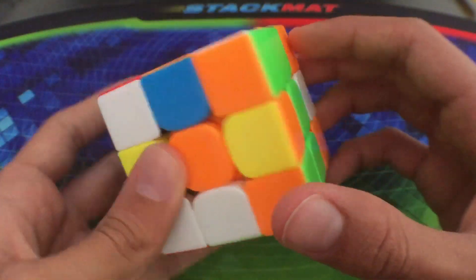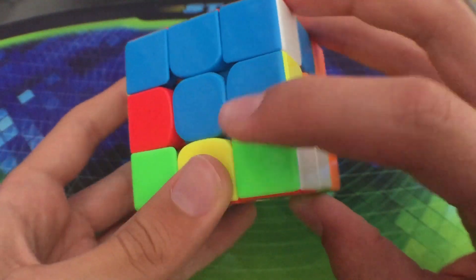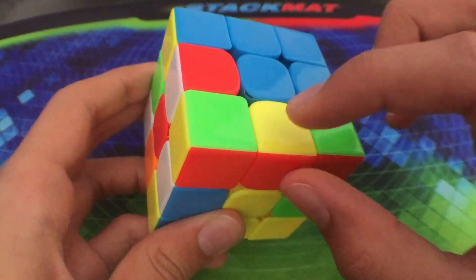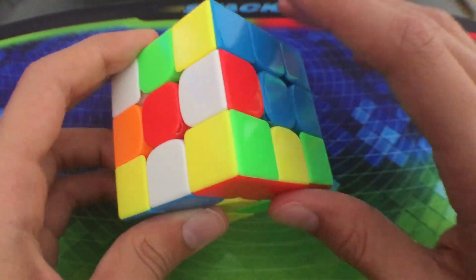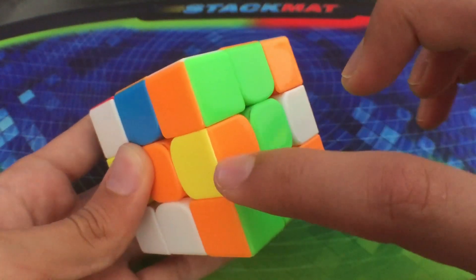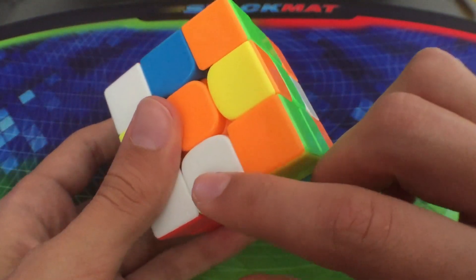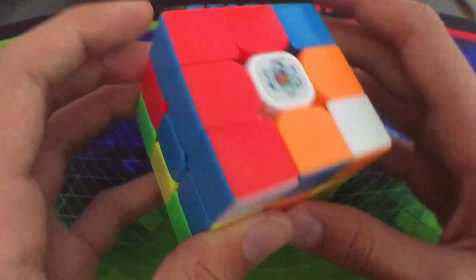When I push this down it'll set this yellow-red piece up for another easy insert, and this piece I'll just have to misalign the cross and then insert it and then align it again.